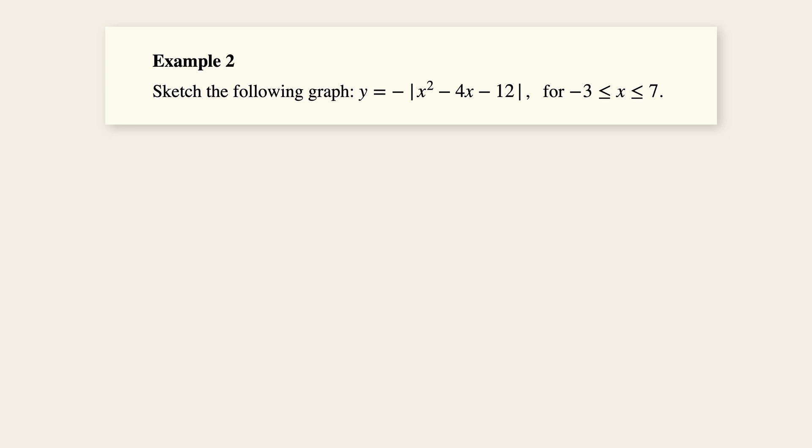Again, we are going to use the same technique, where we will need to first find the turning point by completing the square. Alright, by completing the square, we will have x squared minus 4x plus minus 2 squared minus minus 2 squared minus 12.